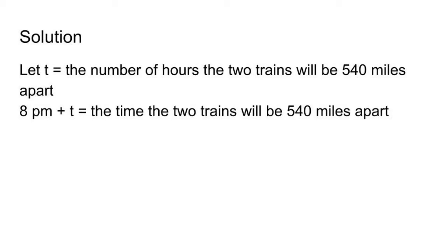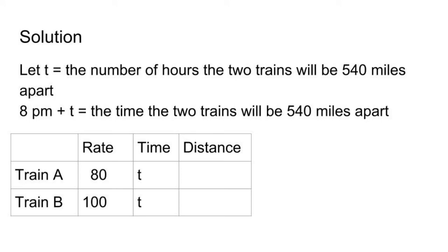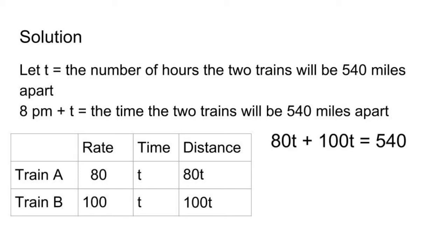Let's use a chart to organize our data. The rate of train A is 80 and the rate of train B is 100. Since distance equals rate times time, the distance traveled by train A is 80t and 100t for train B. Then our equation is 80t plus 100t equals 540.